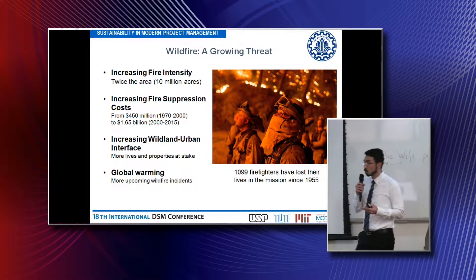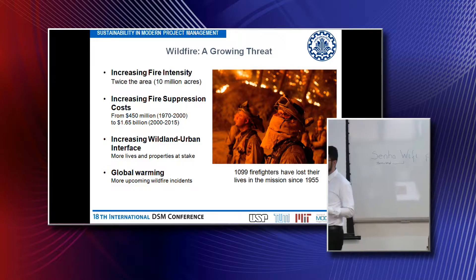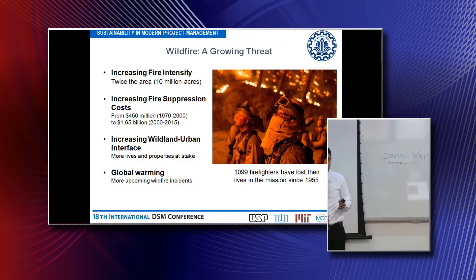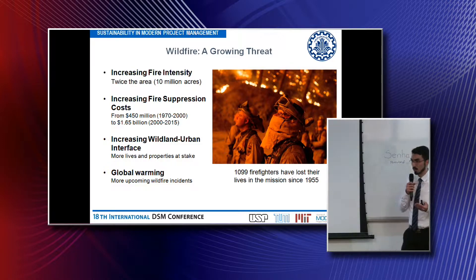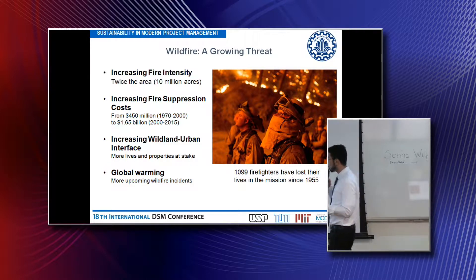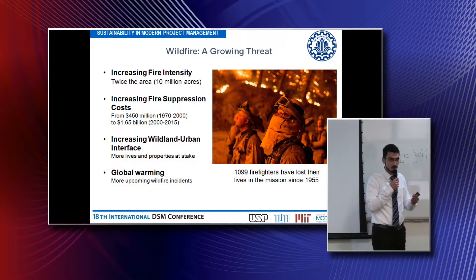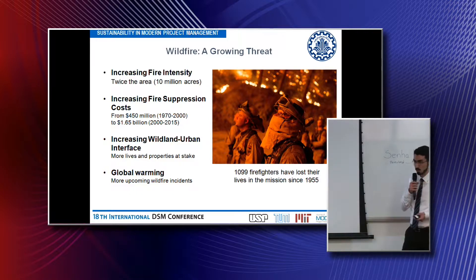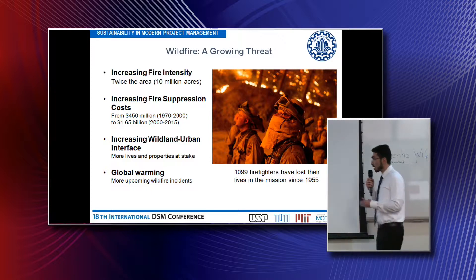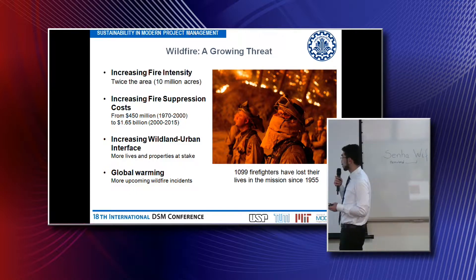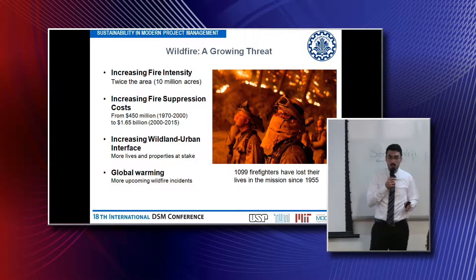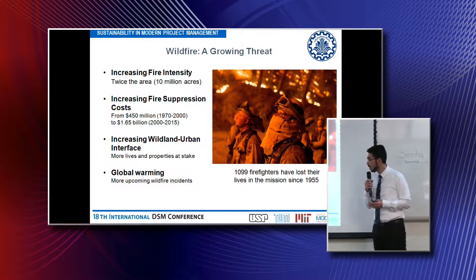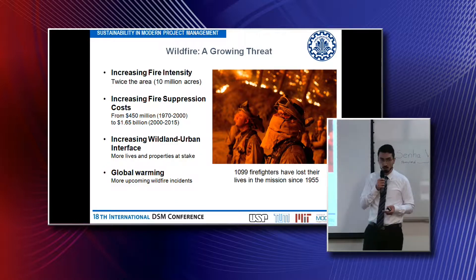To make the situation even worse, more and more people are moving towards suburban areas, which means that more lives and properties are at stake in case of wildfire. Global warming and cyclic droughts also mean that we are going to see more wildfire incidents in the future. And fighting against wildfires is not a benign or straightforward operation — 1,099 firefighters have lost their lives in the mission since 1955.